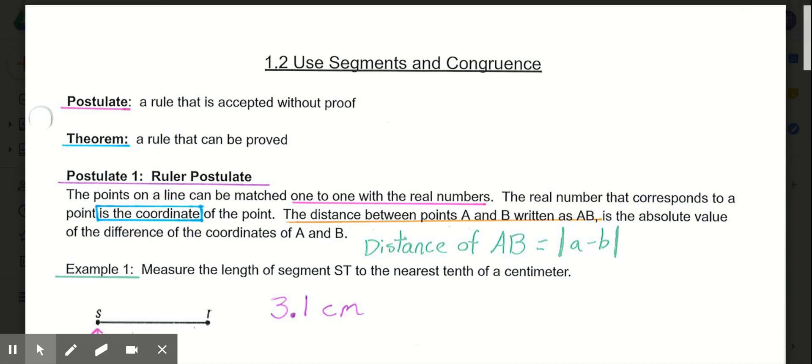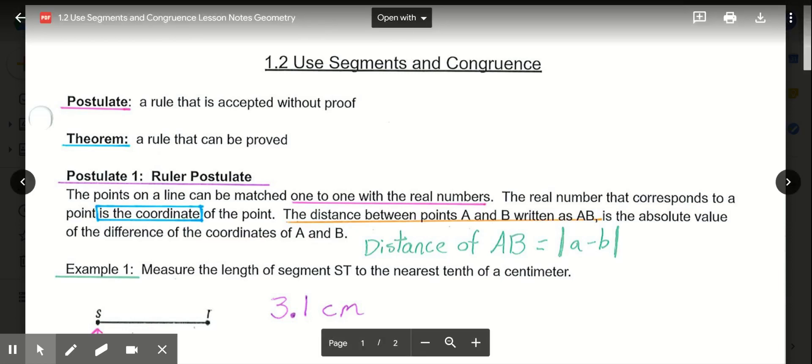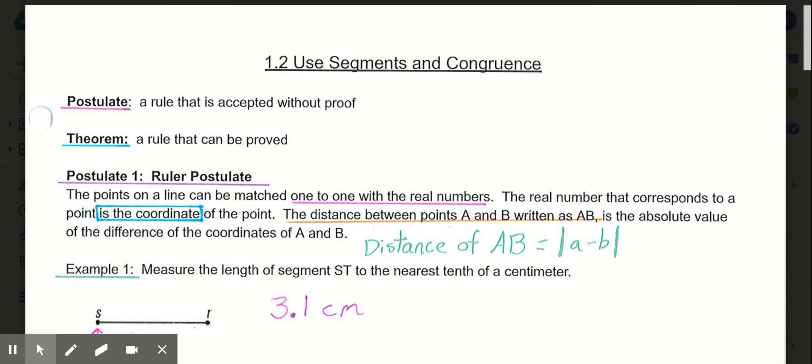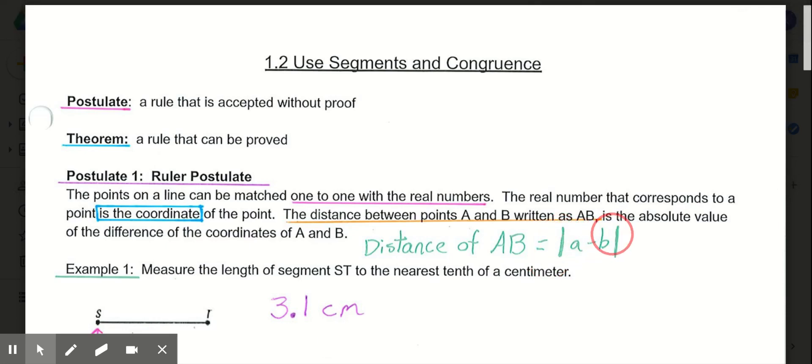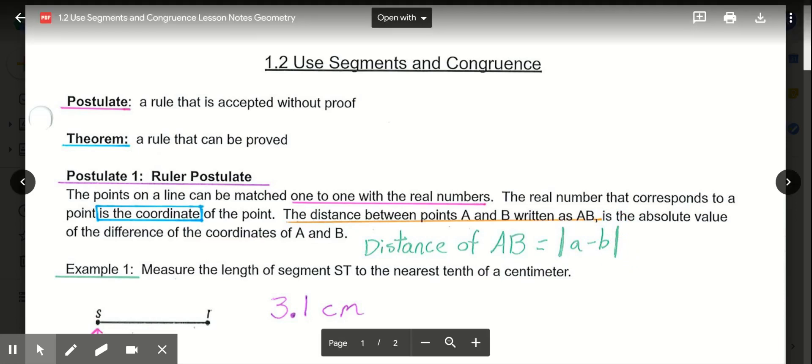So the number that we assign to that point or that corresponds to that point is known as the coordinate of that point. And then the distance between points A and B is written simply as the capital letter A next to the capital letter B. So if we have two capital letters written next to each other, that means the distance between points A and B. So how we figure out distance between two points, the distance is the absolute value of the difference of the coordinates. So we know difference means subtraction, and the absolute value are these two symbols here, the vertical lines that go outside of our subtraction, and the absolute value simply means how far away from zero.